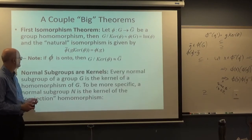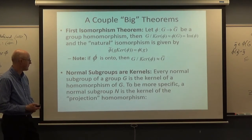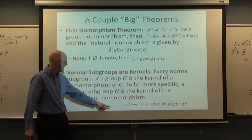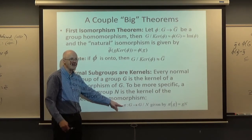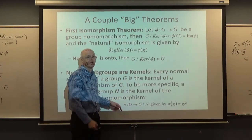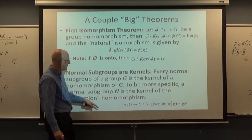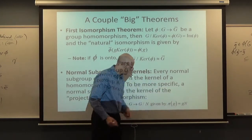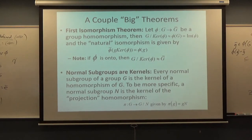One more fact before the quiz: normal subgroups are kernels. Every normal subgroup of a group G is the kernel of some homomorphism of G — specifically, the kernel of the natural projection π, where π maps an arbitrary element of G to its left coset g·N in G/N. The author uses γ for this function but I prefer π, thinking of it as a projection. After the quiz we'll review for the exam.